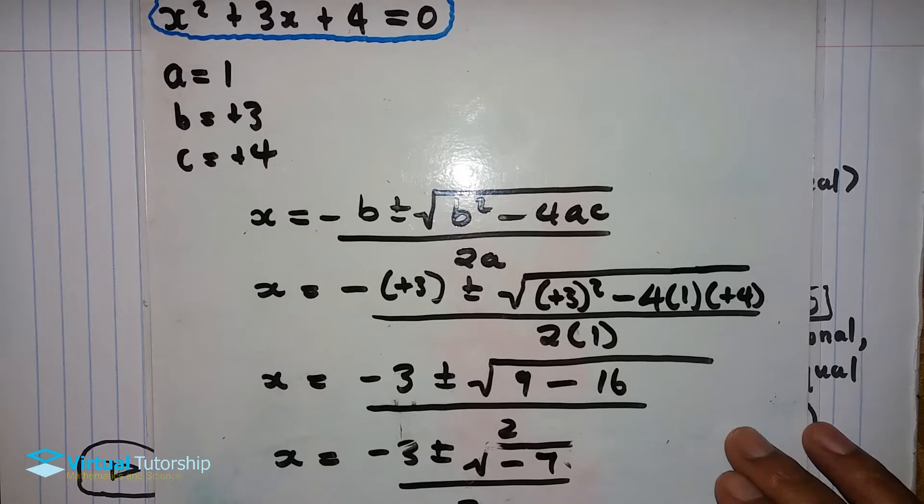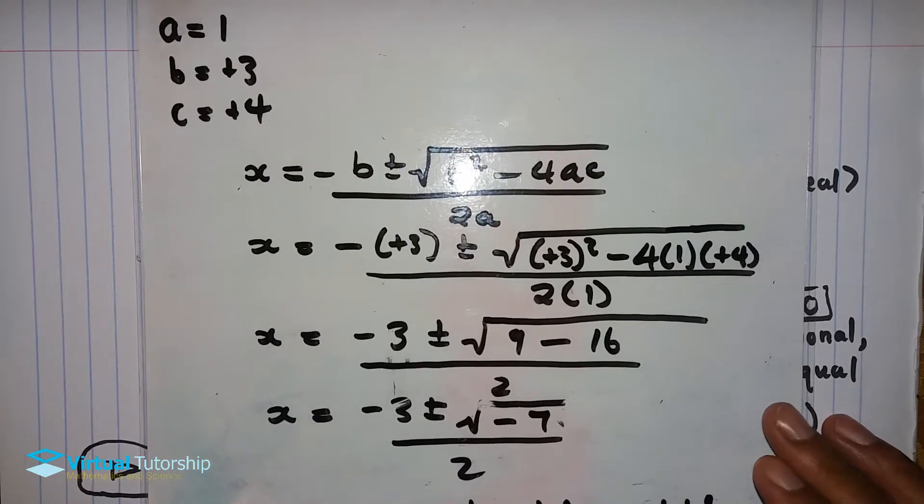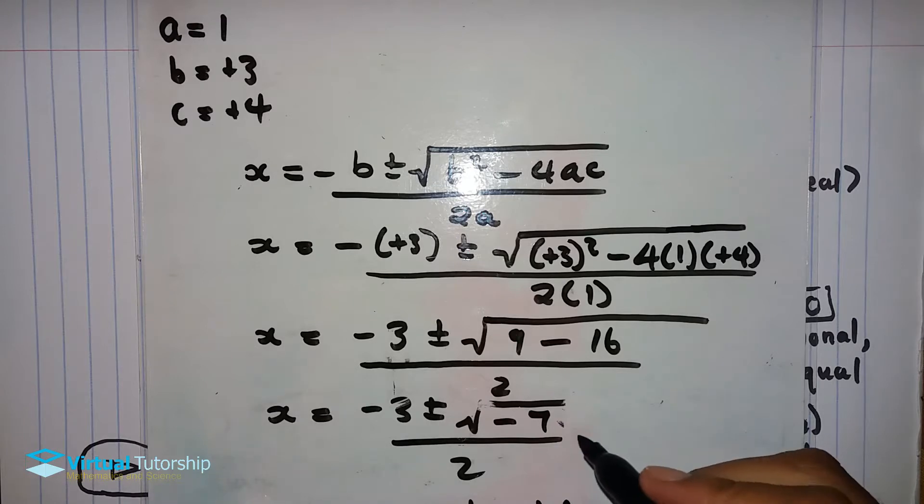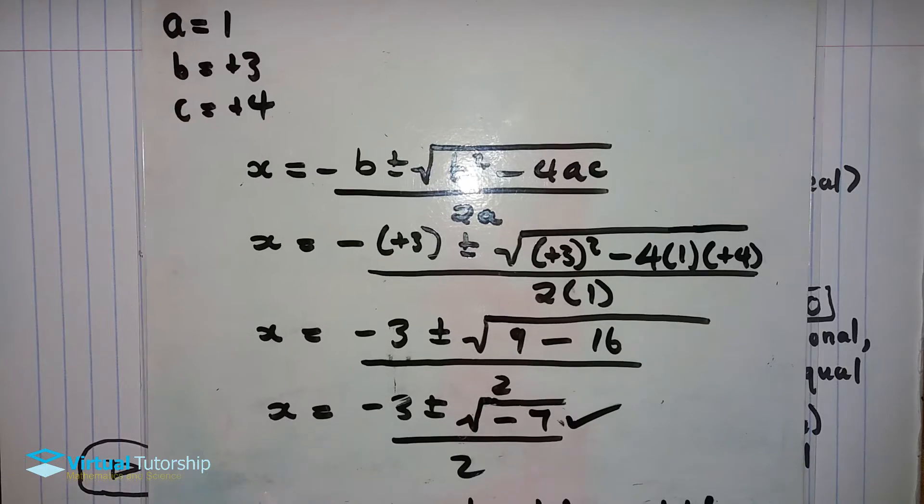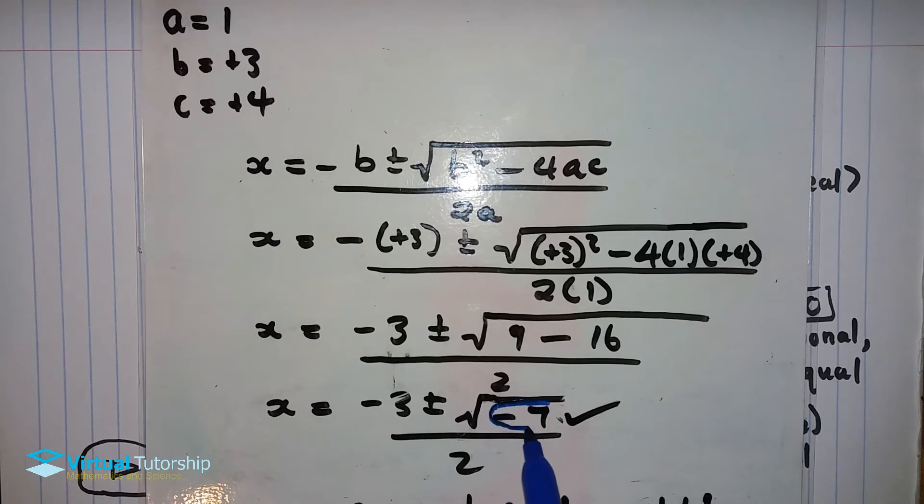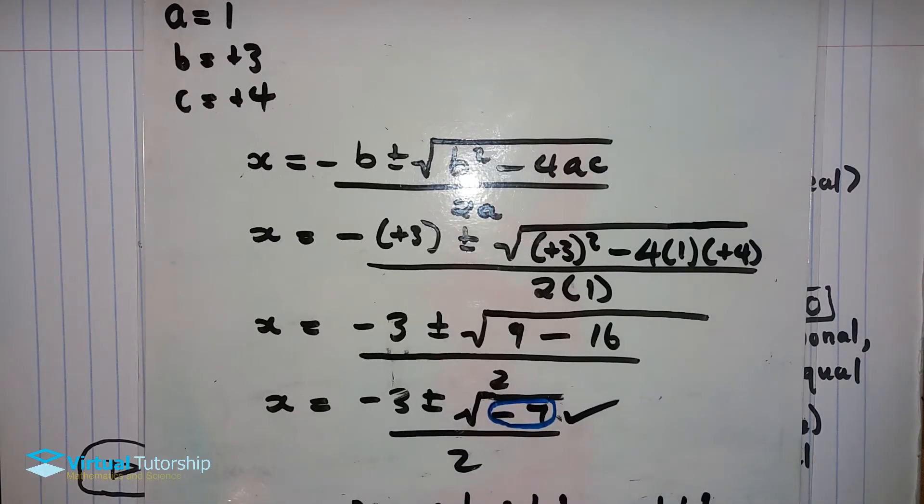When you solve it, you can substitute the values. Just before you answer it, you can see this number under the square root. This number under the square root is negative 7. The square root of any negative number is non-real.